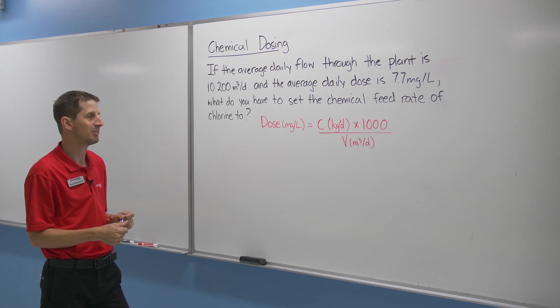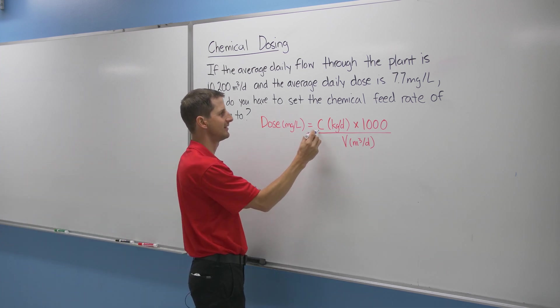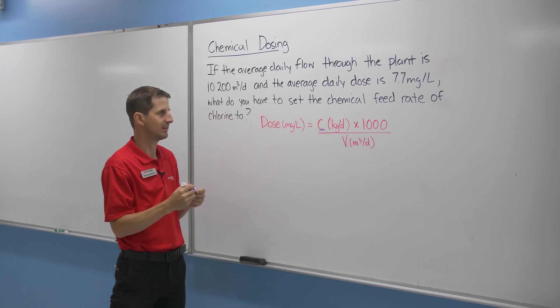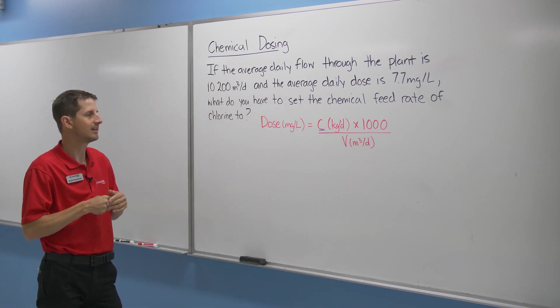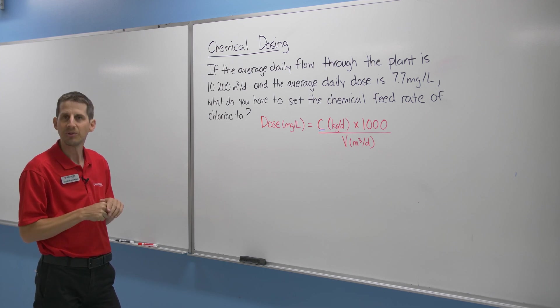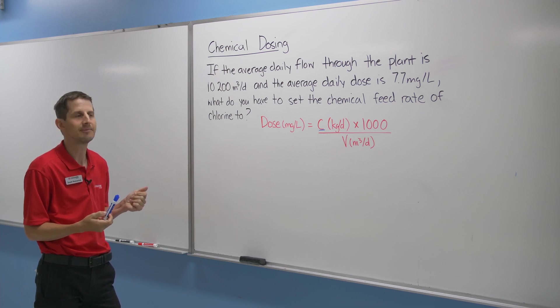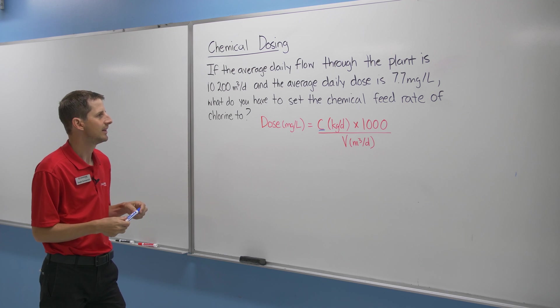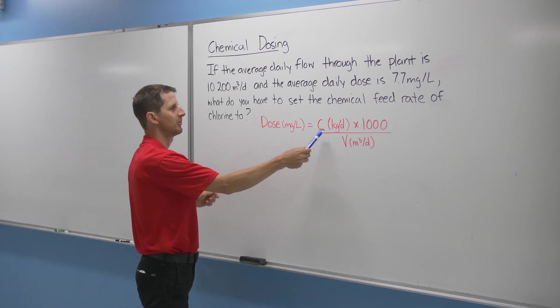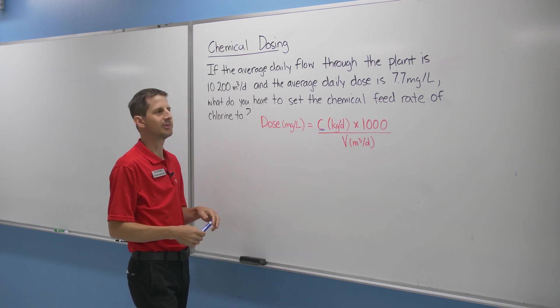So we can work on our formula manipulation because we're not solving for dose. We're solving for big C, solving for the weight of chemical that we need to feed into the system. So how do we do that? Well, the traditional way of dealing with an equation and a formula manipulation is to take one variable at a time and deal with it. So in this case, if we want to solve for C, we don't want this here and we don't want that there. So we need to get rid of those two terms.